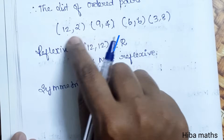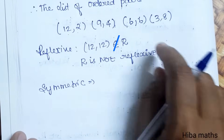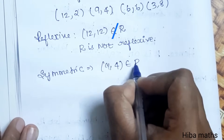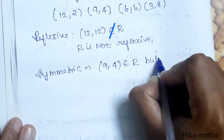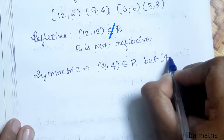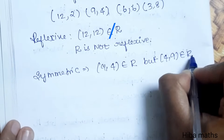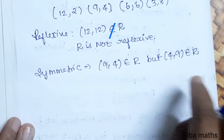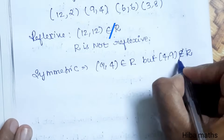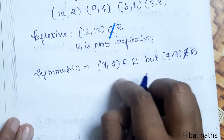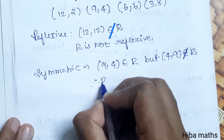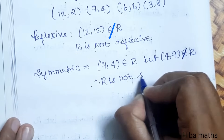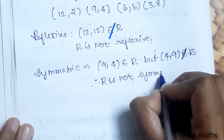Next, we check symmetric. For R to be symmetric, if (a, b) is in R then (b, a) must also be in R. Here (9, 4) is an element of R, but (4, 9) is not an element of R. Therefore R is not symmetric.